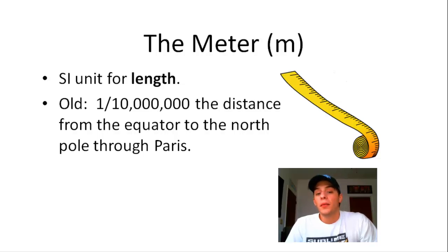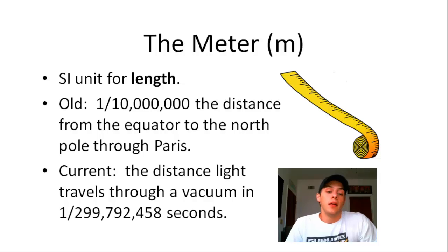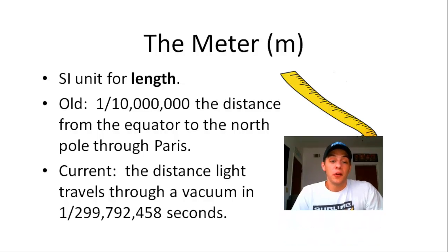And nowadays, the meter is more precisely defined. Currently, the meter is defined as the distance that light travels through a vacuum in one out of 299,792,458 seconds. So that's a pretty precise definition of the meter.